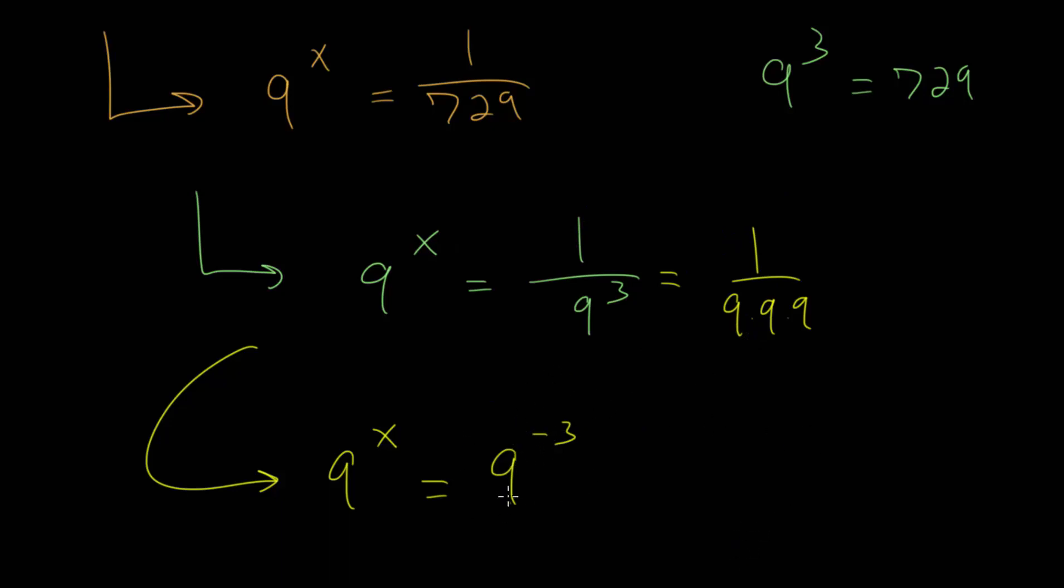So this 9 to the minus 3, that just means divide by 9 three different times. So when rewriting this with the same base, for this equation to be true, the exponents must be equal to each other. So we can say that x is negative 3.